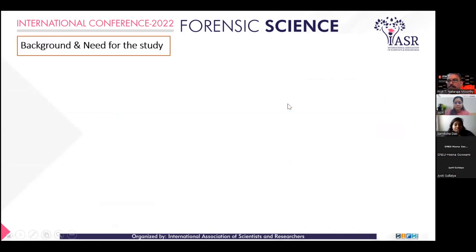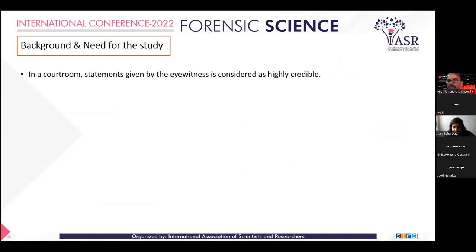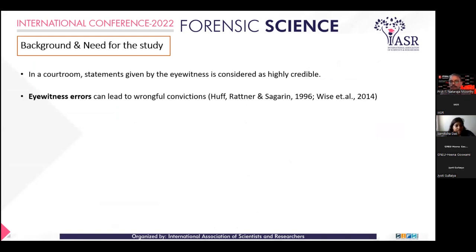Eyewitnesses over the centuries have been very crucial members in assisting the system of justice delivery, and in a courtroom, statements given by them are highly credible. However, eyewitness errors can lead to wrongful convictions, and as correctly pointed out by the APA in 2014, one among every three make an erroneous identification.